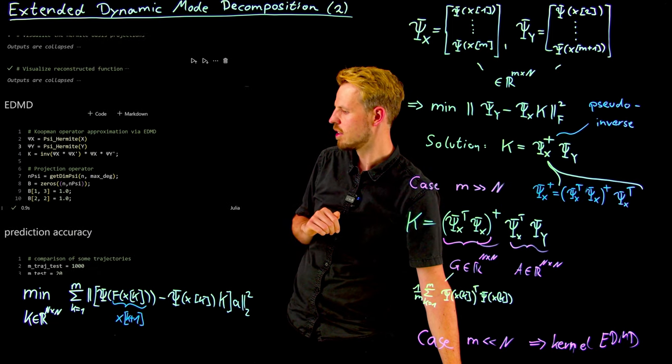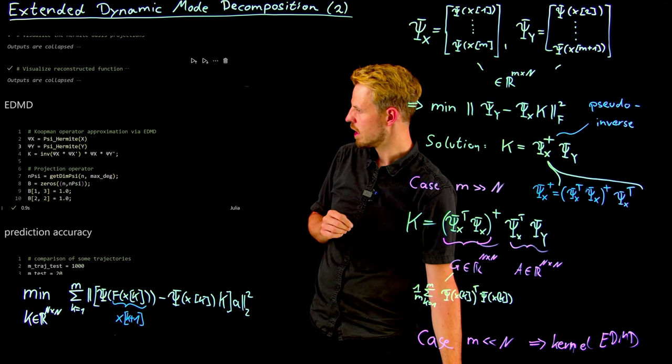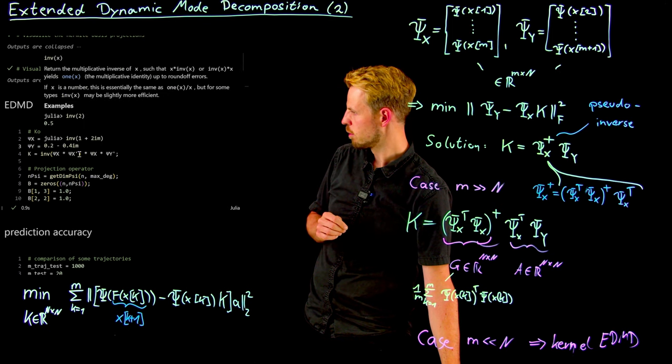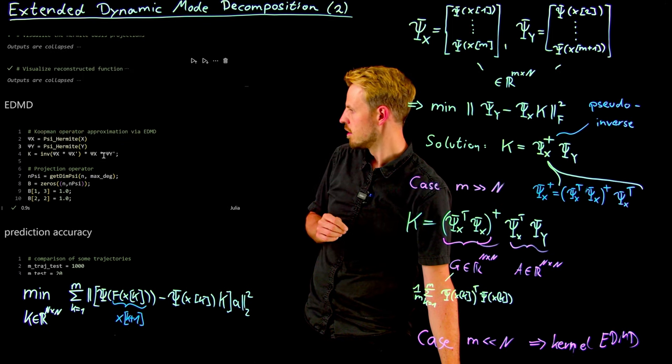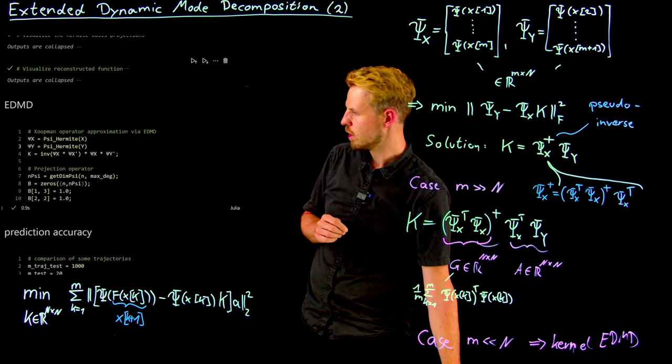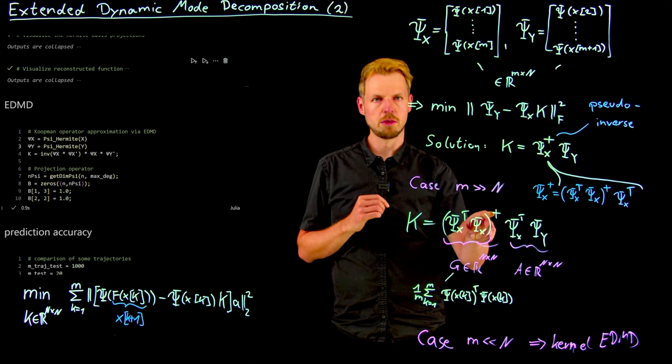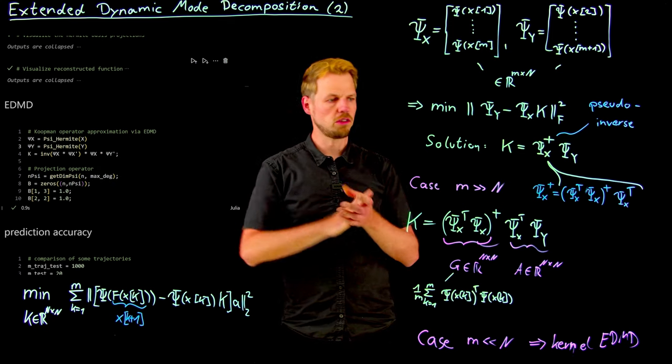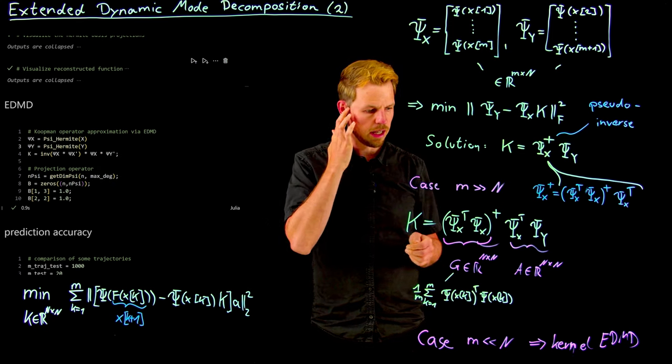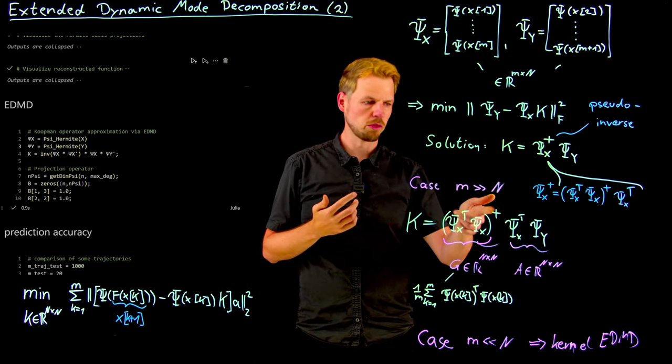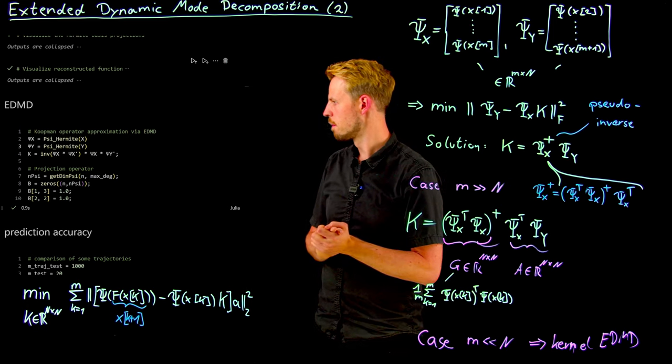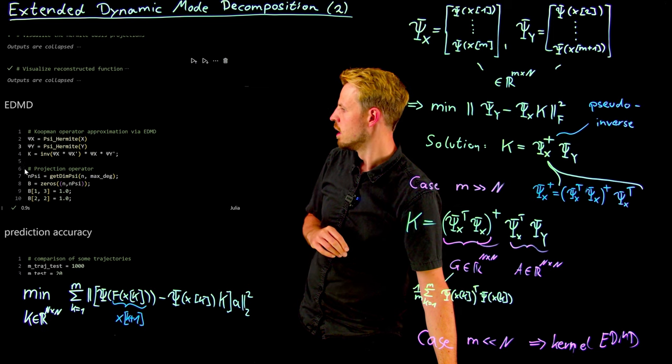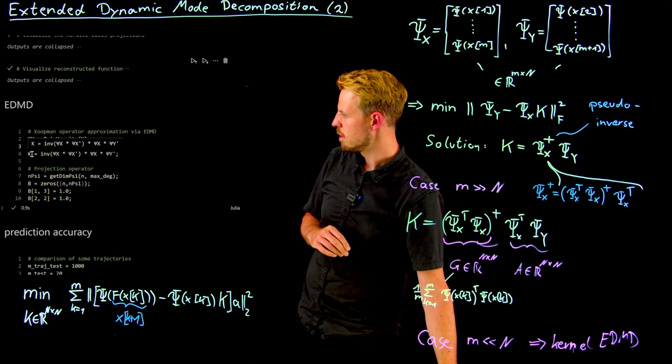Which allows us then to calculate EDMD in exactly the way as I have set it up here. So if you look, this expression here is exactly the one I have written here on the board. Only here we have the pseudo-inverse. If we take this matrix, we make sure that it's symmetric, so quadratic, and we can take the inverse, which gives us the same answer here. Pseudo-inverse numerically is slightly more stable, but for this one it's sufficient.